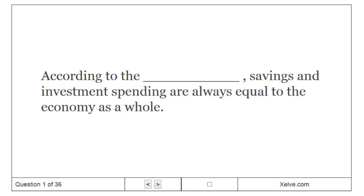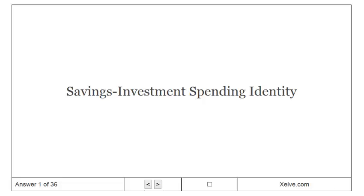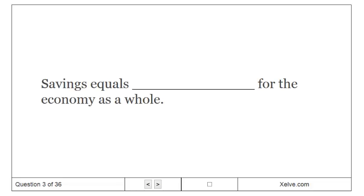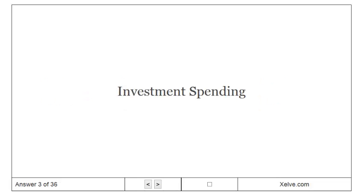According to the Savings Investment Spending Identity, savings and investment spending are always equal for the economy as a whole. Total income equals total spending. Savings equals investment spending for the economy as a whole.